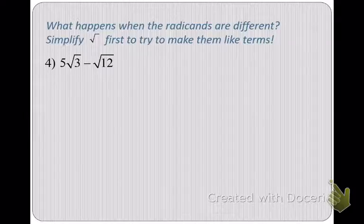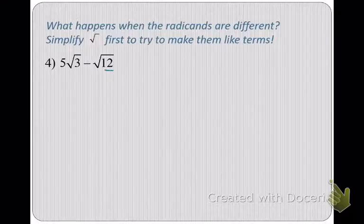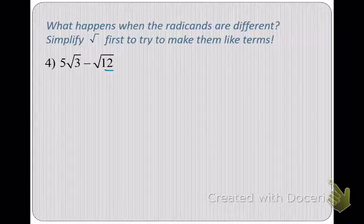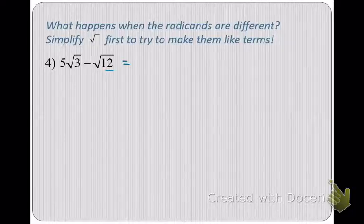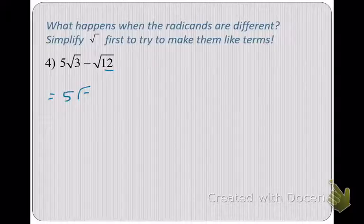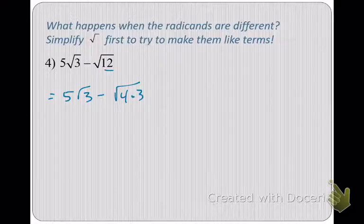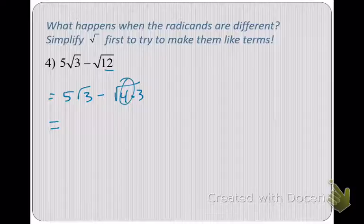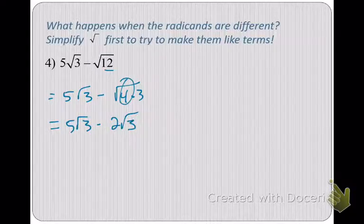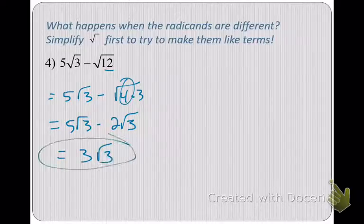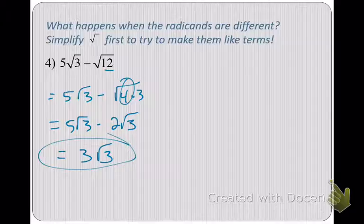Now, how about these — are they like terms? No, the radicands are not the same. So what we do is simplify either radicand; sometimes you've got to simplify both. Cross your fingers and hope that you get like terms when you're done. For example, to simplify square root of 12, find the perfect square factor — 4 goes into 12, so 4 times 3 inside the radical. The square root of 4 is 2, so now we go 5 minus 2, giving us 3 radical 3. We simplified the square root of 12 and got like terms, so now we can combine them.